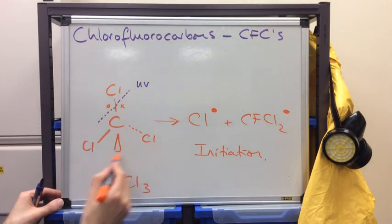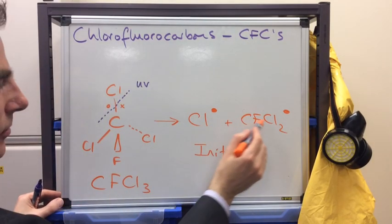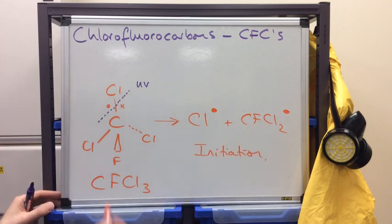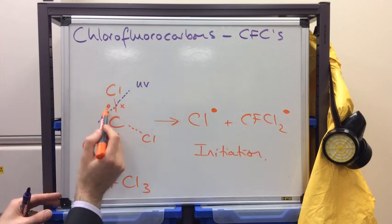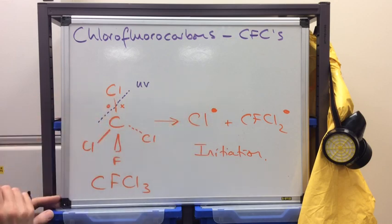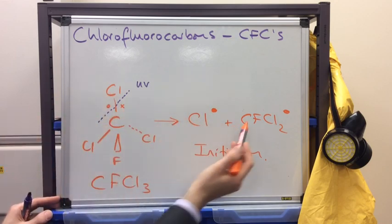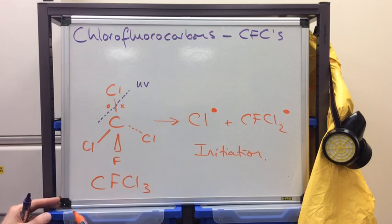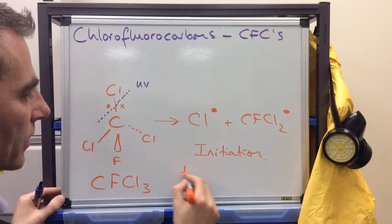Because we have a stable molecule forming two free radicals. And because the electron pair in the bond is shared equally, so the chlorine gets one of the electrons, and this gets the other electron, this is called homolytic fission.